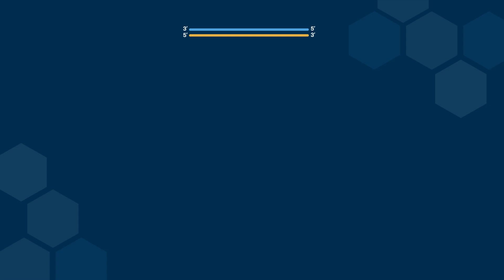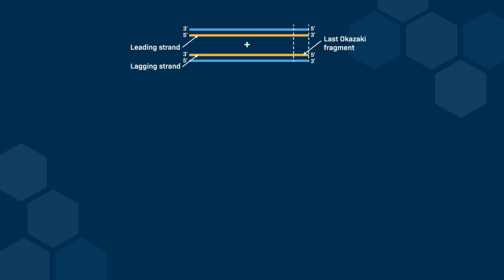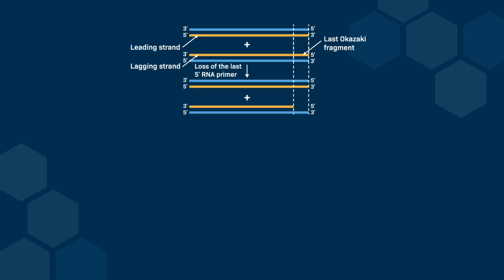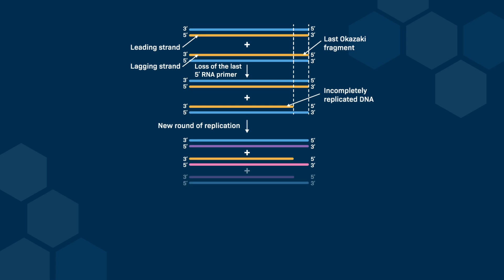In our chromosomes, the leading strand's template is fully replicated until the end of the chromosome. However, the issue lies with the lagging strand template. In consequent replication cycles, this problem becomes more pronounced because the lagging strand cannot be fully replicated at the very end. As a result, with each round of replication, the chromosome gradually shortens, potentially leading to the loss of essential genetic information over time.